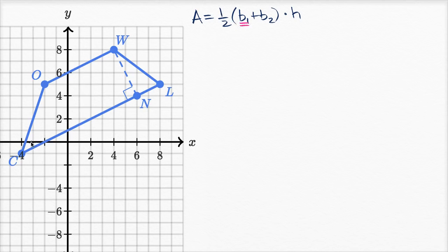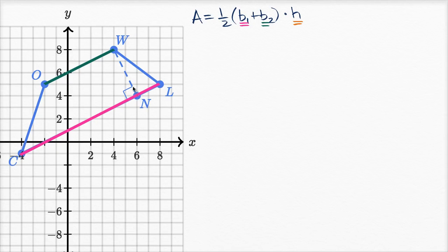We could call base one segment CL — that is going to be base one. Base two would be the length of segment OW. And then our height H — that would just be an altitude. They drew one in a dotted line here, and notice it intersects base one, segment CL, at a right angle. So this would be the height. If we know the lengths of each of these segments, we can evaluate the area of this trapezoid. You could even break down a trapezoid into two triangles and a rectangle, which is one way to think about it.